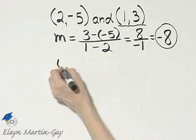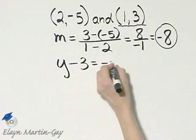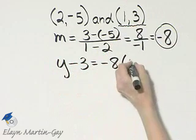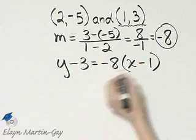And my point slope form is, y minus the y value of 3 is equal to the slope, negative 8, times x minus the x value of 1. Let's go ahead and distribute.